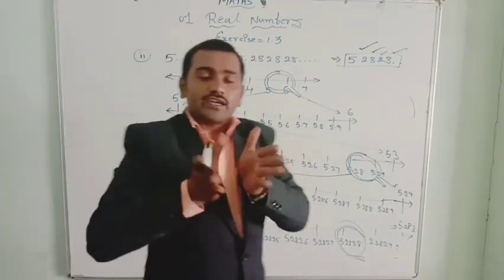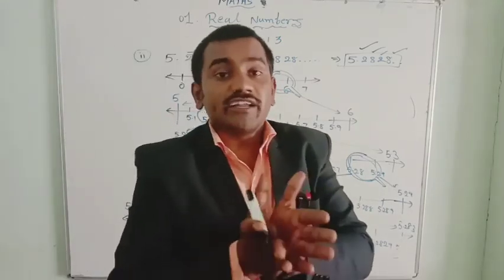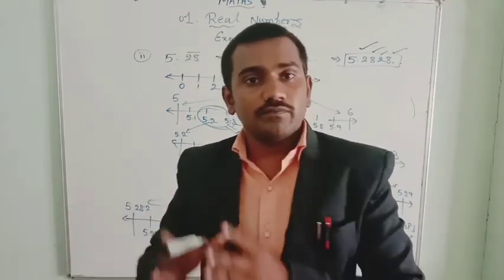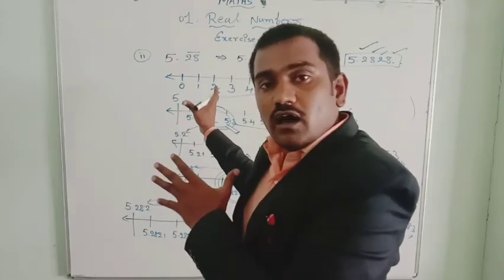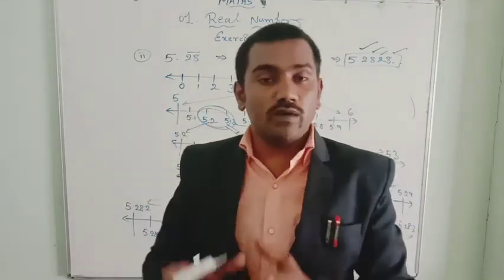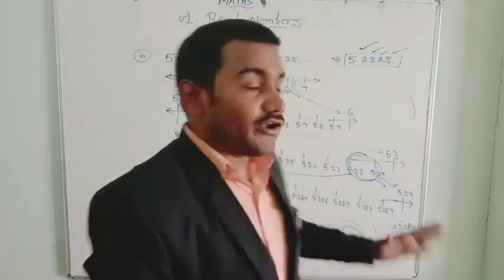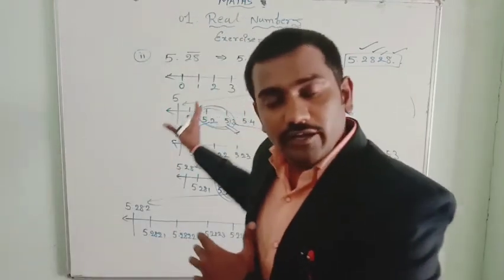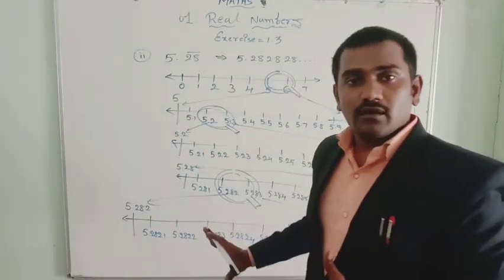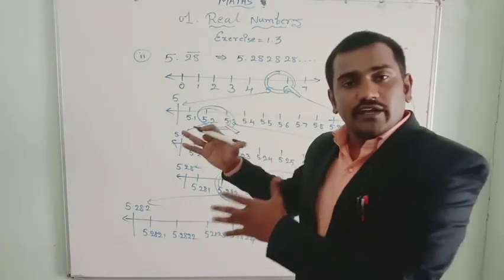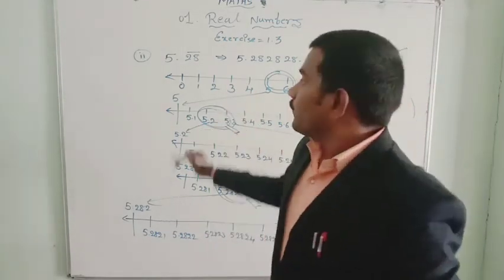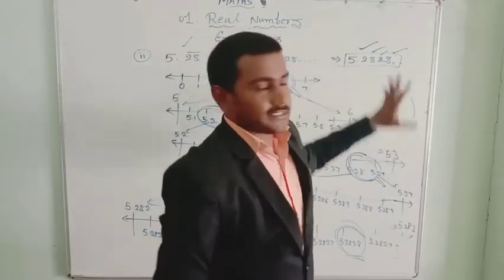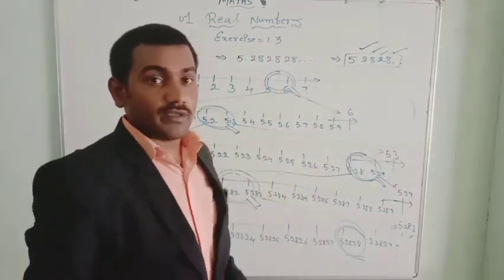In this way we can represent terminating decimal numbers — where the decimal digits are countable — on the number line using successive magnification. Non-terminating repeating decimal numbers can also be represented this way. For any non-terminating repeating decimal number, try to take up to 4 digits and represent it in this way.